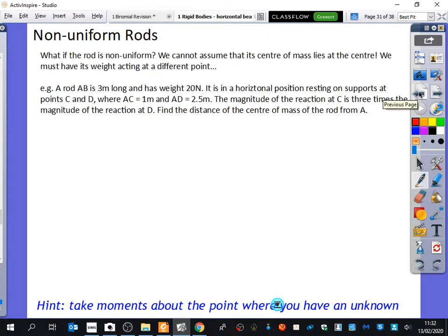So what if the rod is non-uniform? Well, we can no longer assume that its centre of mass lies at the centre. We must have its weight acting at a different point and we don't know where that is.